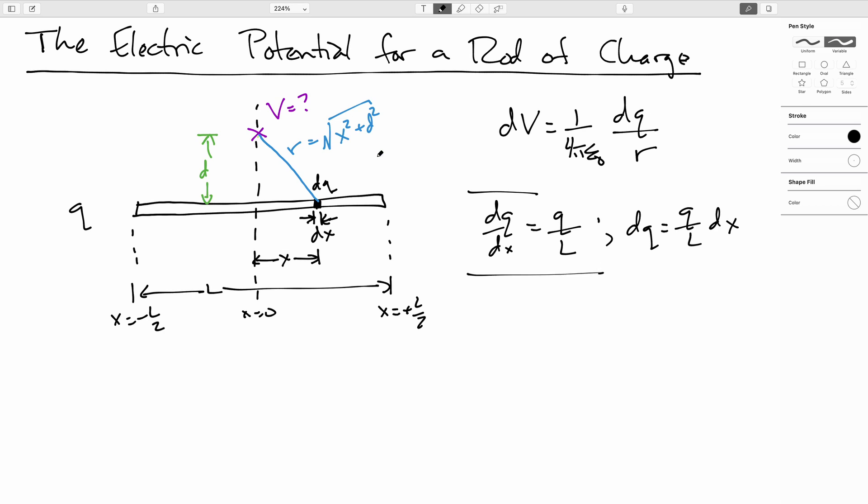So now let's make both of these substitutions into our expression for DV. DV will be 1 over 4 pi epsilon naught Q over L DX over the square root of X squared plus D squared.